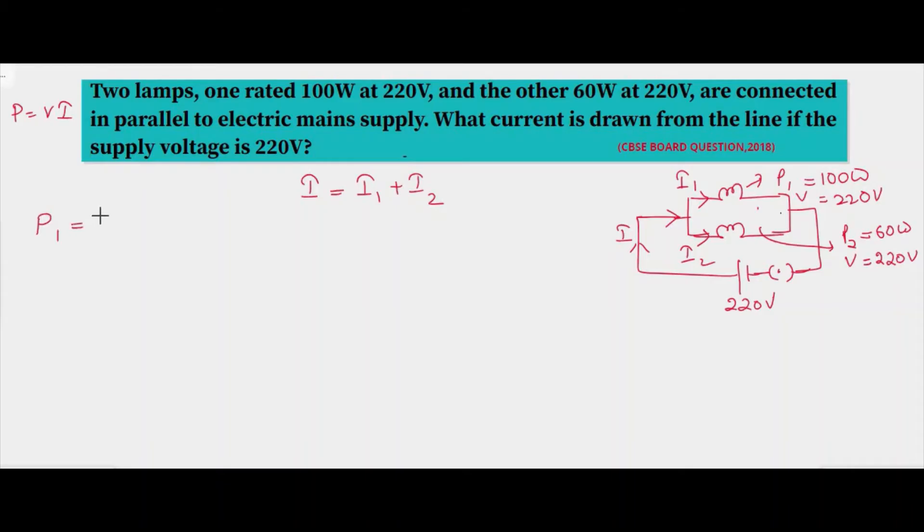Power one is given as 100 watt and voltage is 220 volt. So for the first one, current will be P by V, that is 100 by 220, which equals 5 by 11 ampere.